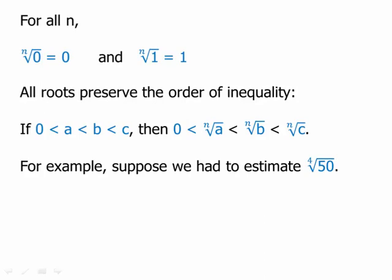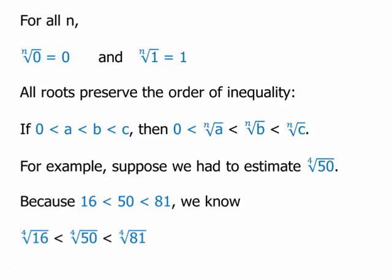For example, suppose we had to estimate the fourth root of 50. We'd want to locate it between two fourth powers. Well, 2 to the fourth is 16, and 3 to the fourth is 81. Because 50 is between 16 and 81, we can take the fourth root of all of those, and the fourth root of 50 would be a decimal somewhere between 2 and 3. The test won't expect anything more fancy — as long as you can figure out which two integers it falls between, that is fine.